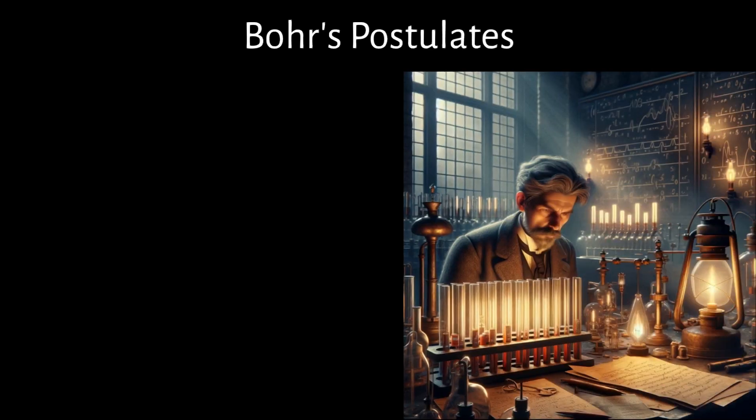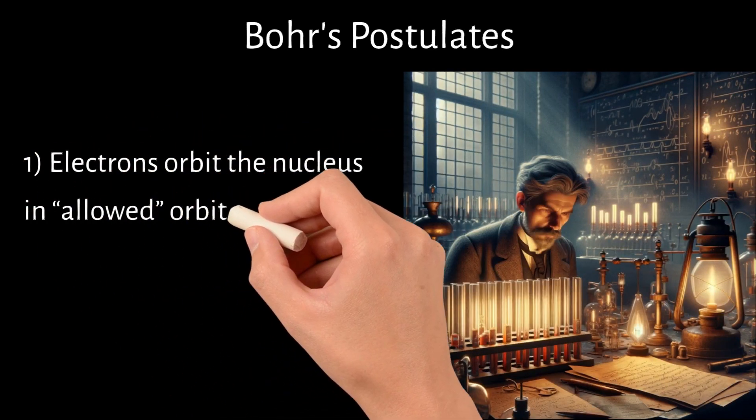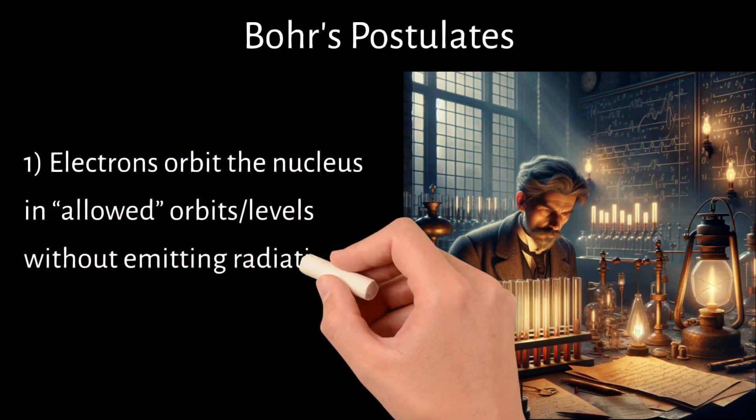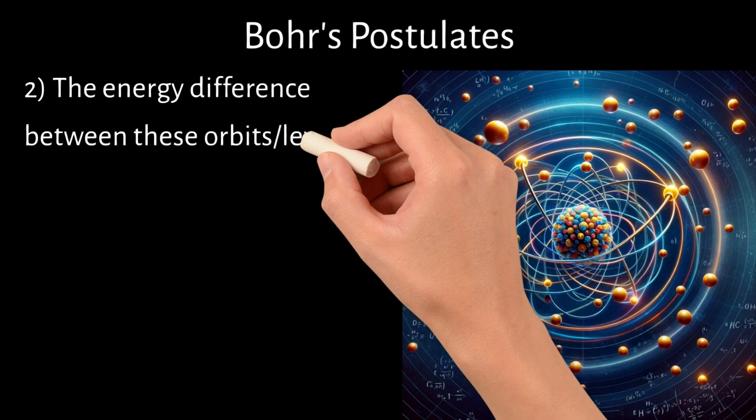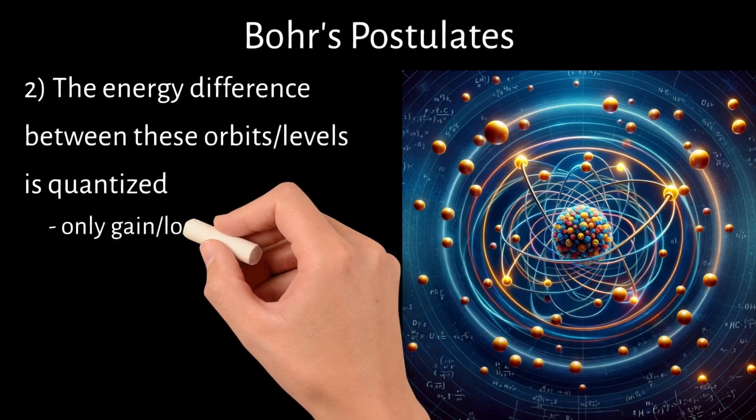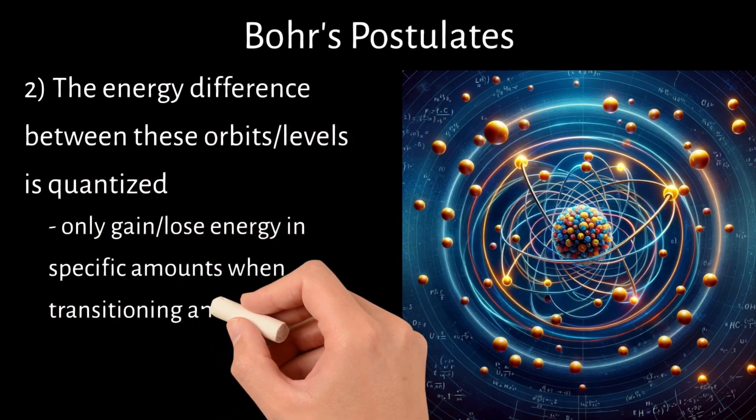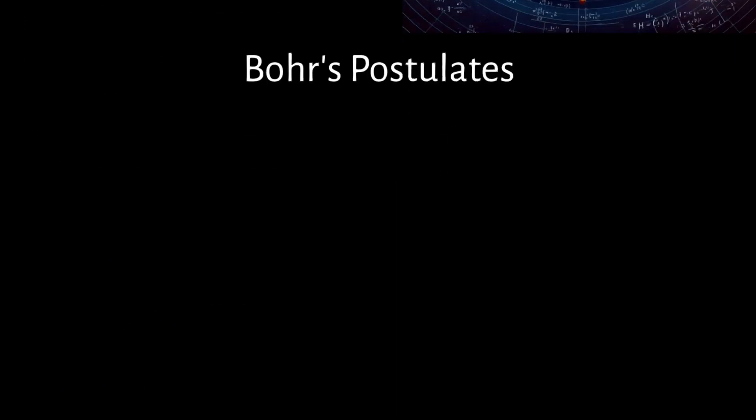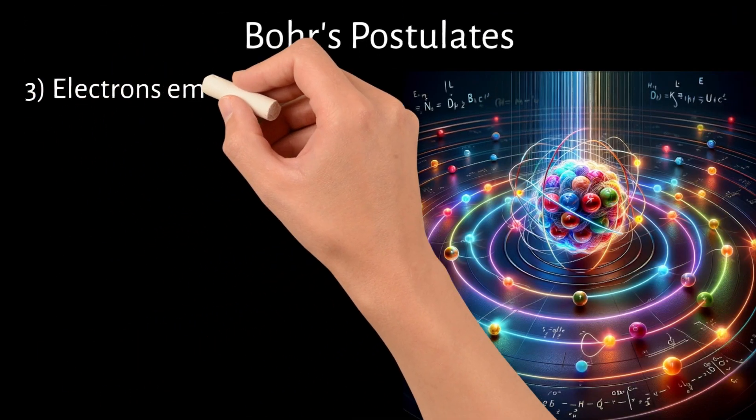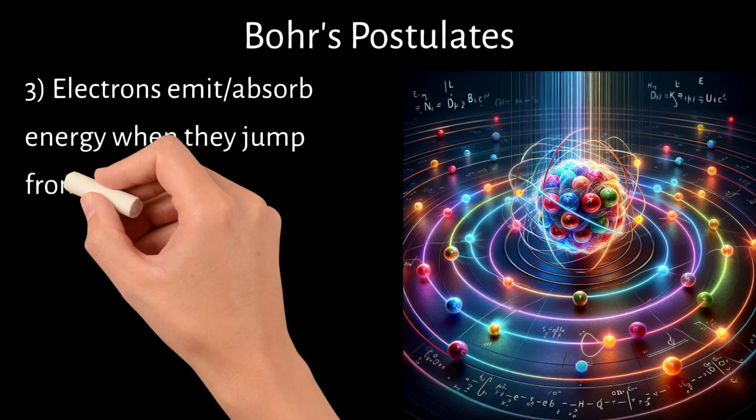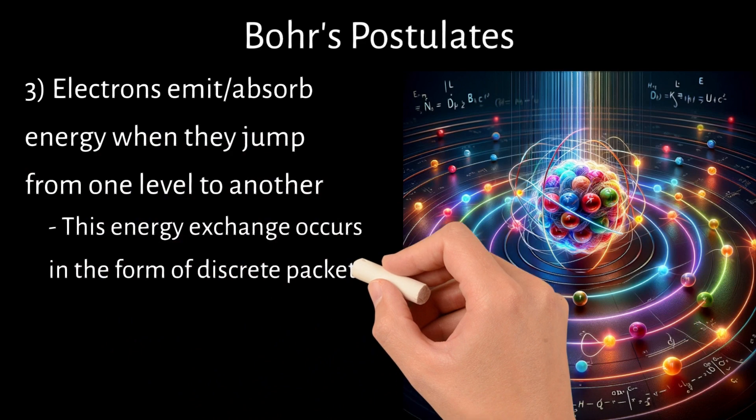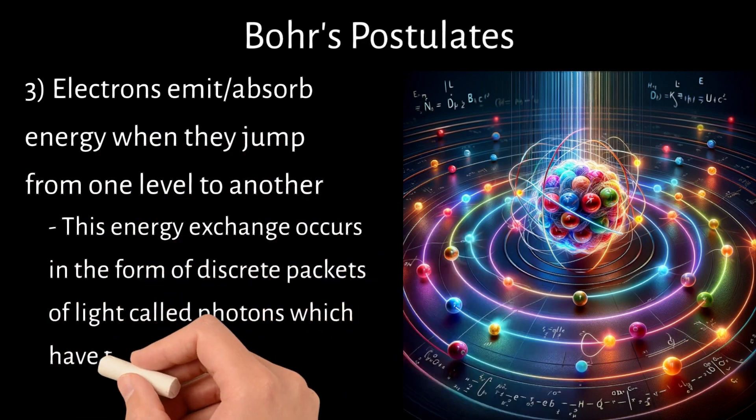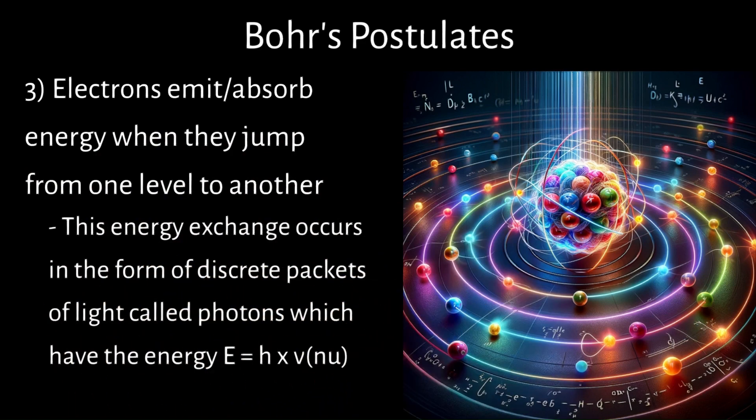He introduced several postulates. 1. Electrons orbit the nucleus in certain allowed orbits or levels without emitting radiation. 2. The energy difference between these orbits or levels is quantized, meaning electrons can only gain or lose energy in specific amounts when transitioning amongst these levels. 3. Electrons emit or absorb energy when they jump from one level to another. 4. This energy exchange occurs in the form of discrete packets of light called photons, which have the energy E equals H times nu.